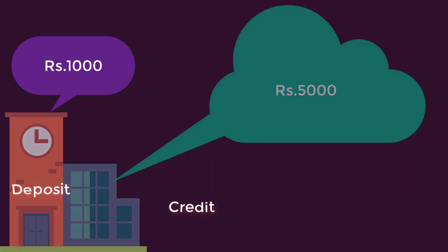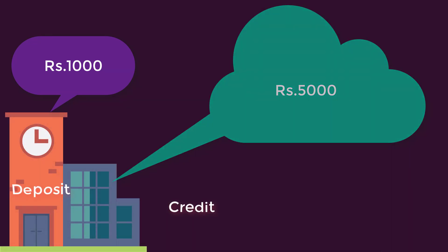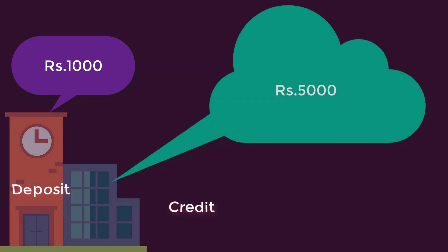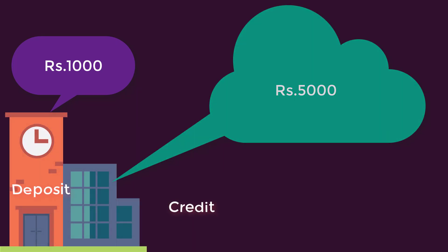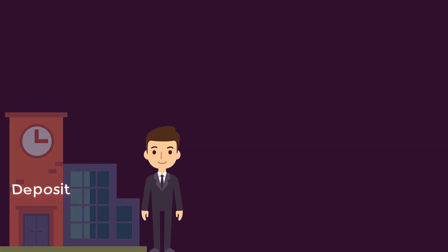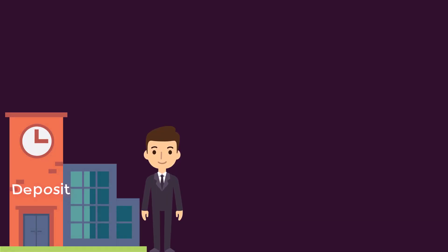Let us explain the process of credit creation with a simple model. There is one bank, and for the sake of simplicity, only the relevant part of the balance sheet of the bank is shown. Customer Mr. A deposits 1000 rupees with the bank. Since the customer deposits his surplus money, it is called a primary deposit.